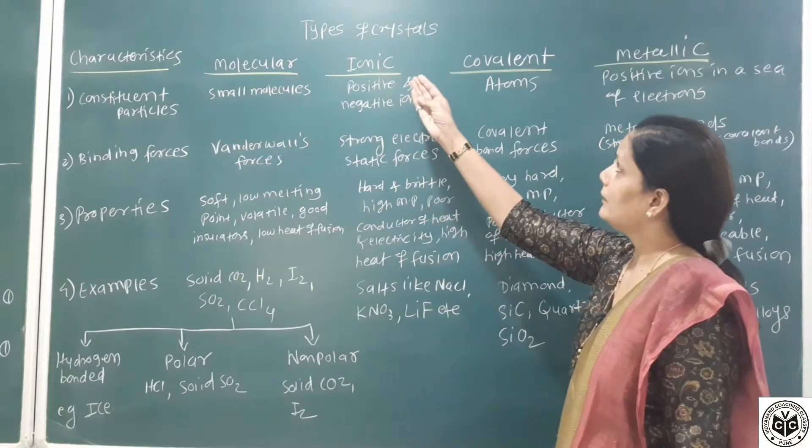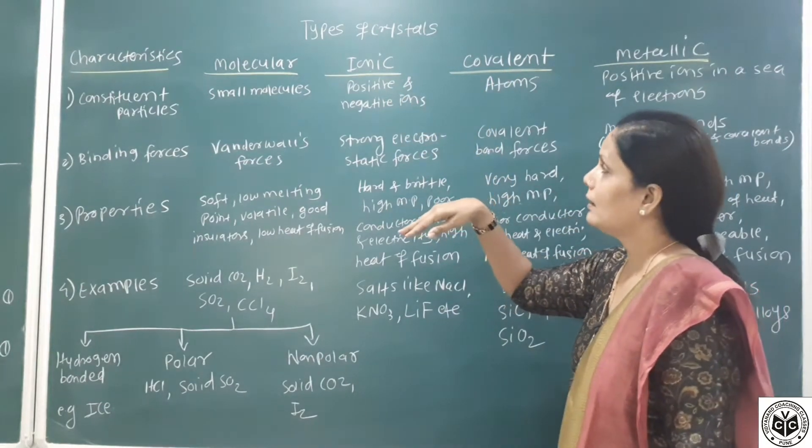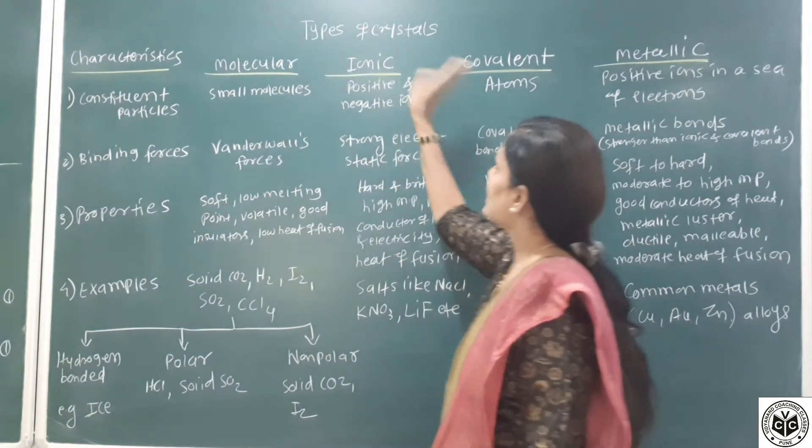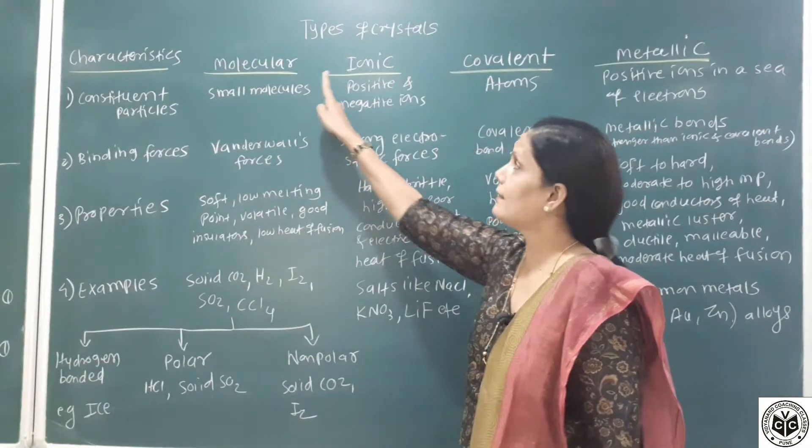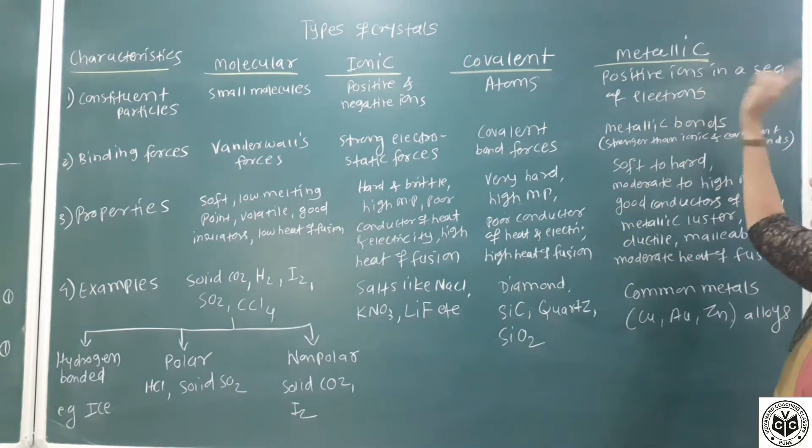Okay, next we will see different types of crystalline solids. Basically, those crystalline solids are classified into molecular solids, ionic solids, covalent solids, and metallic solids.